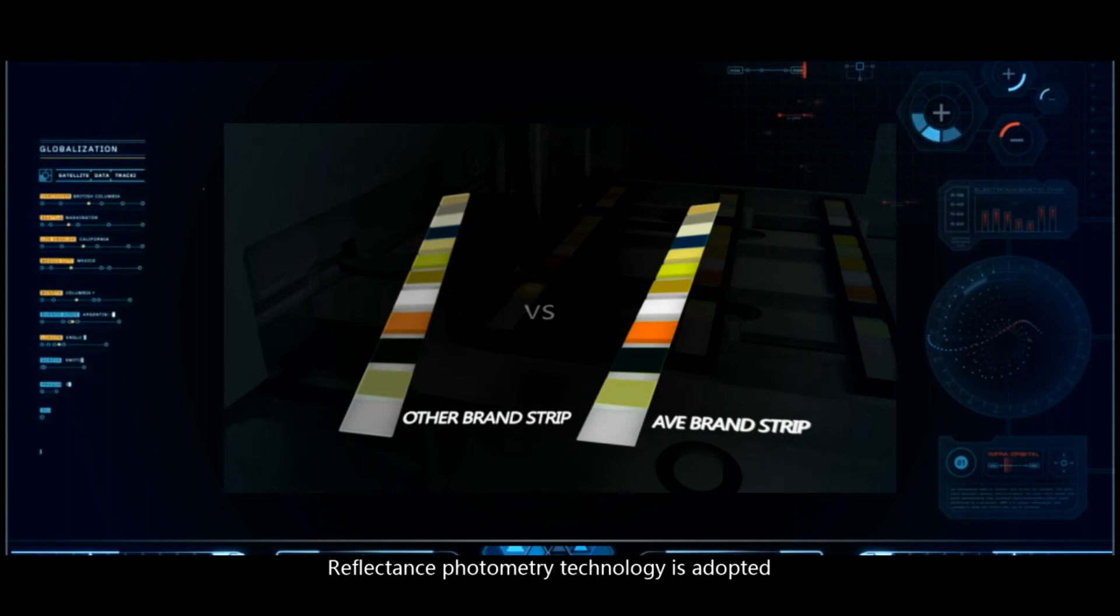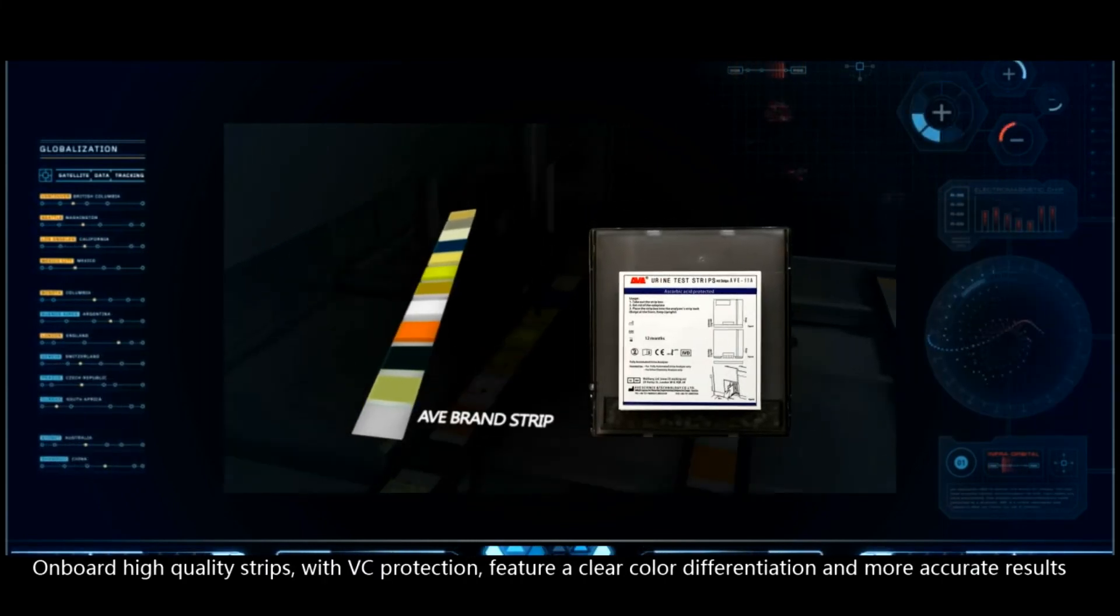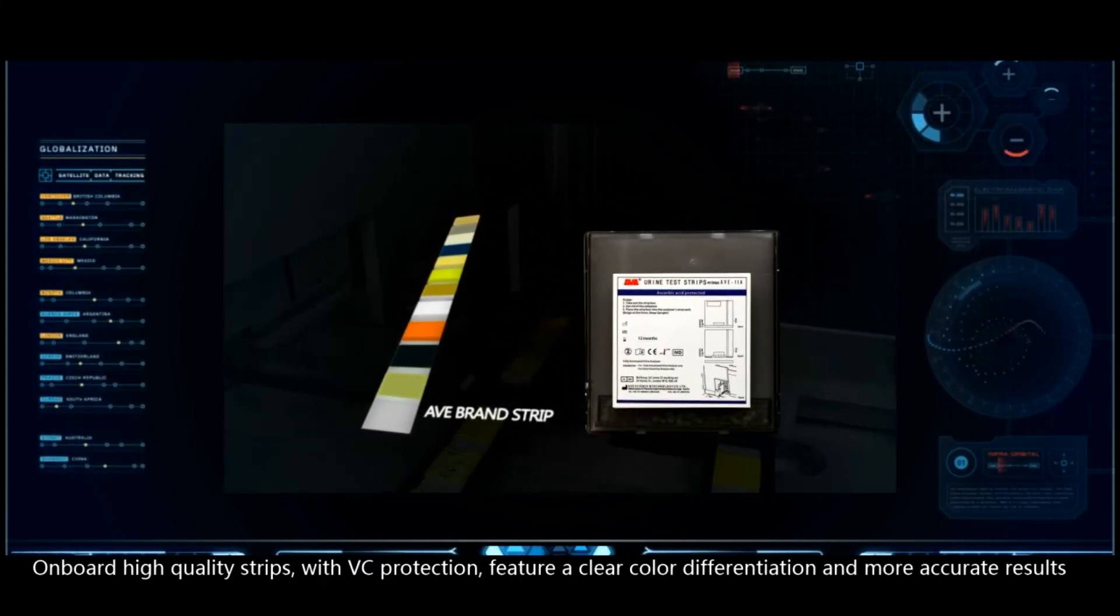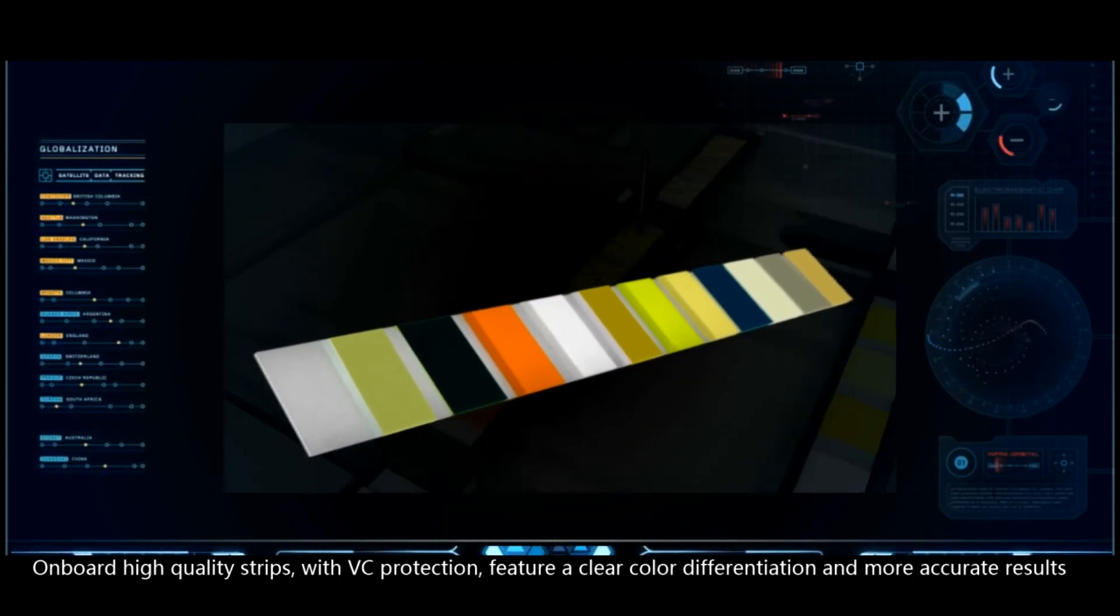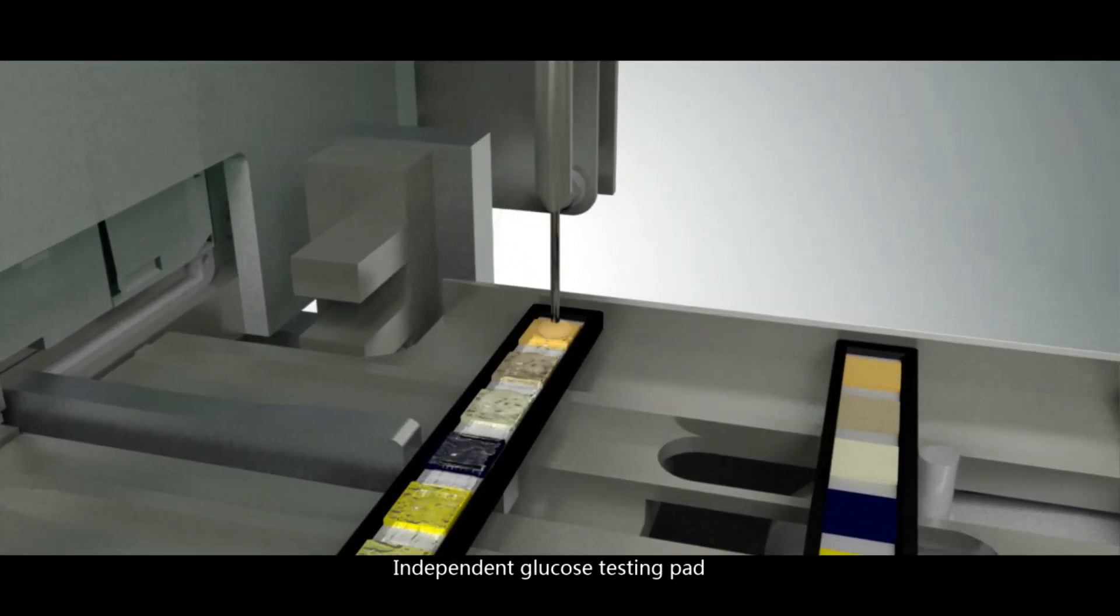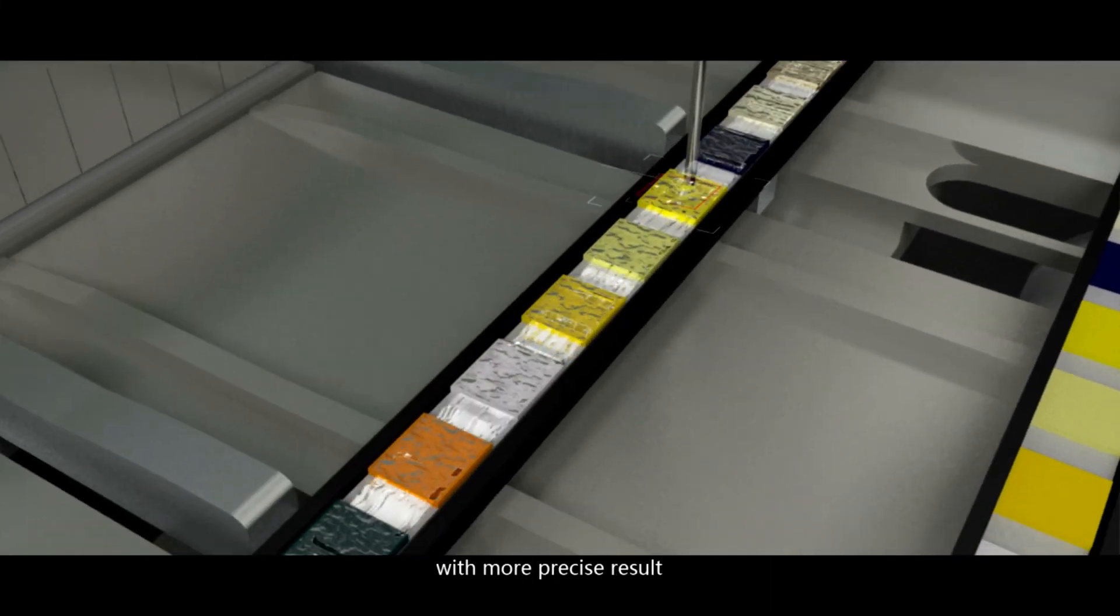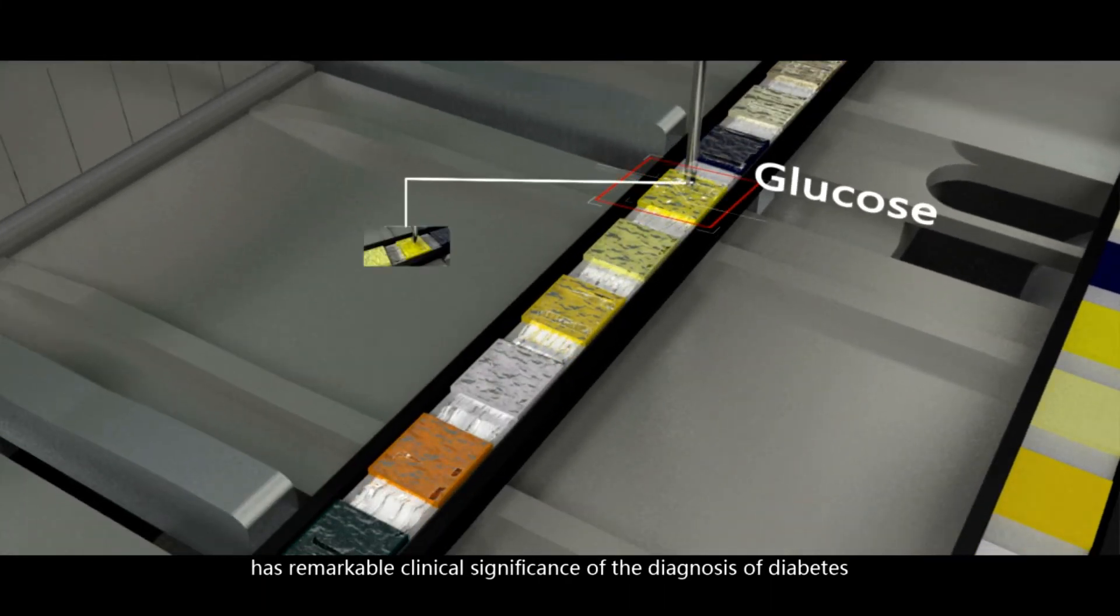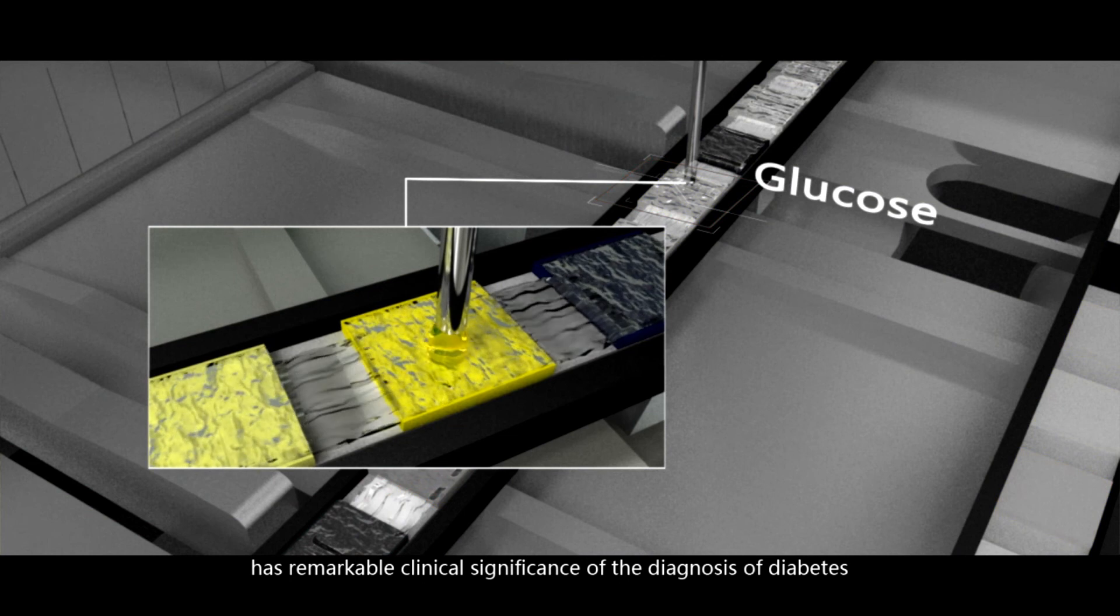Reflectance photometry technology is adopted. On-board high quality strips with VC protection feature a clear color differentiation and more accurate results. Independent glucose testing pattern with more precise result has remarkable clinical significance on the diagnosis of diabetes.